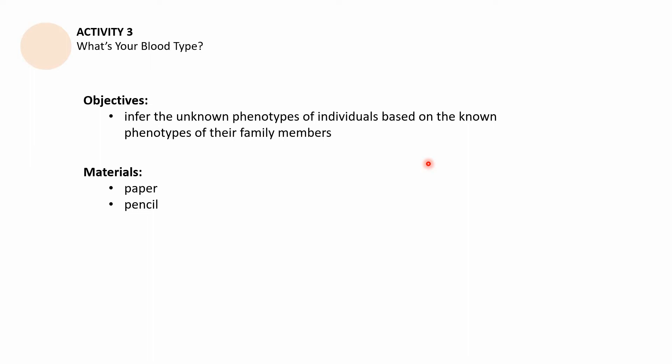Let's proceed to Activity Number 3, the second part of this presentation, entitled 'What's Your Blood Type.' Our objective is to infer the unknown phenotypes of individuals based on the known phenotypes of their family members. You will need a piece of paper and a pencil. So far, we know that in multiple alleles, more than two alleles can code for a particular trait. In the ABO blood type system, I^A and I^B are dominant, while lowercase i is recessive — giving us three alleles, hence the term 'multiple alleles.'